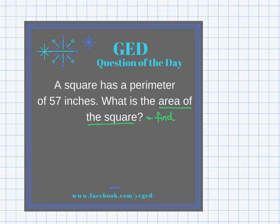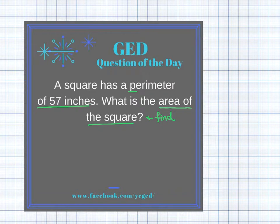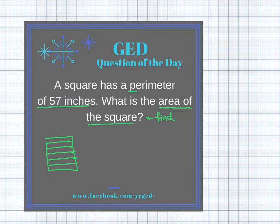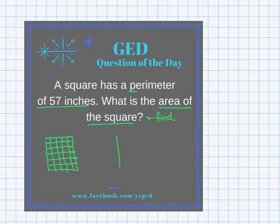The second important thing to ask yourself is: what have I been given, what information do I know? I only have one piece of information — I know the square's perimeter. It says a square has a perimeter of 57 inches. The perimeter is the distance around the outside of a square, and I'm looking to find the area — the number of square units it would take to cover the shape.